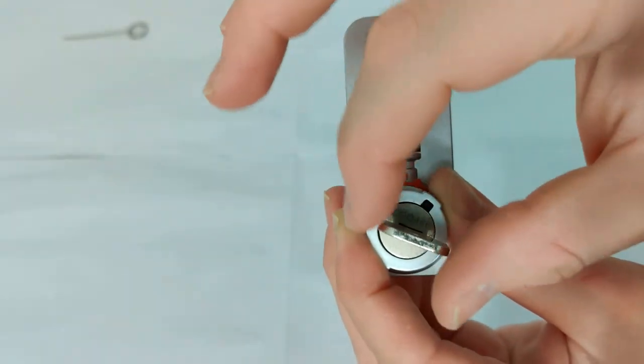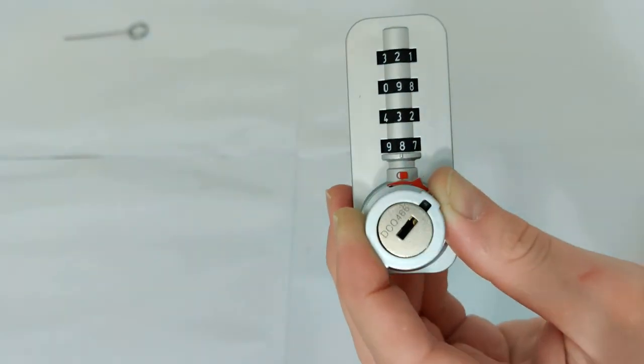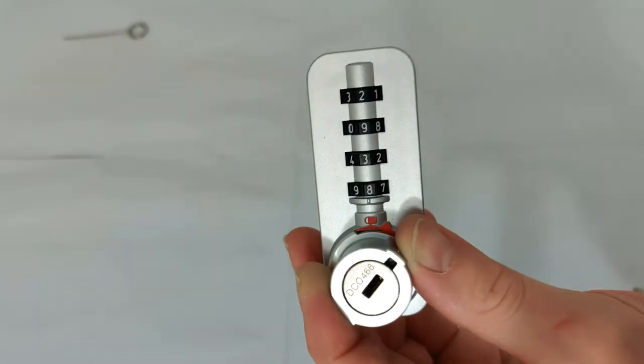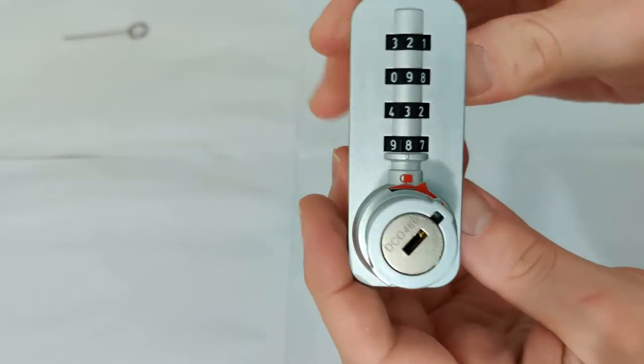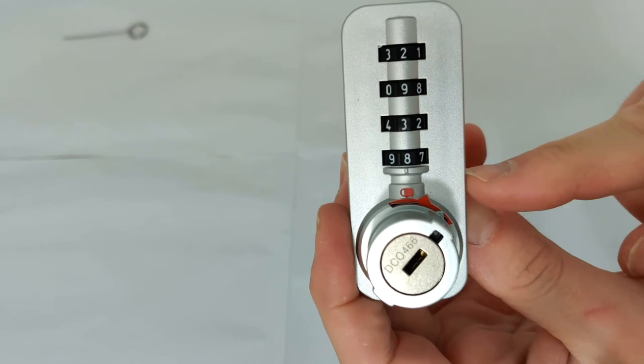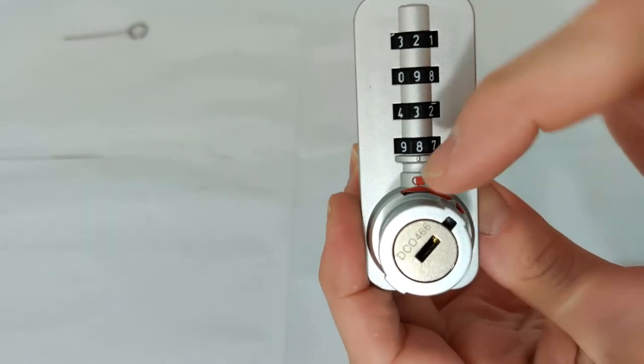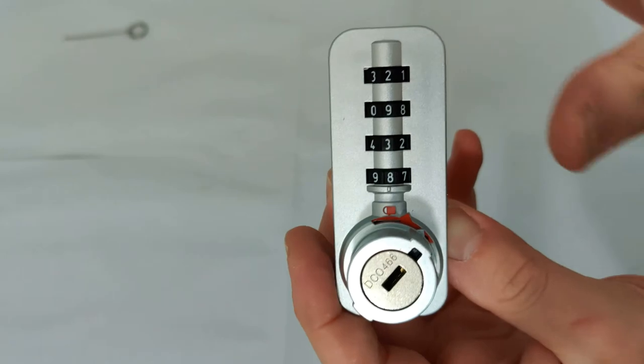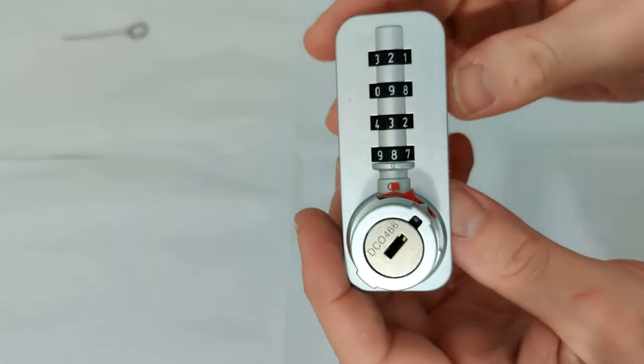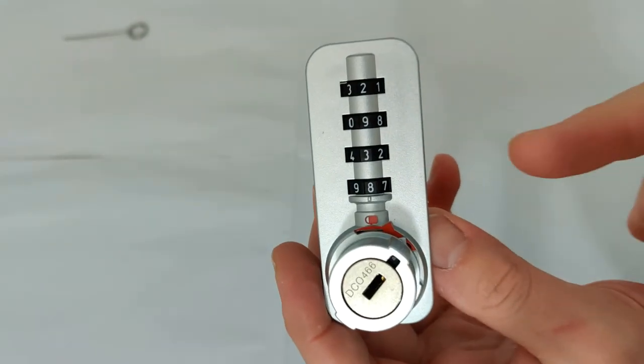Now we can turn the key back around and remove it. At this point we have two options. We can now either retain this code, turn the dial back to the lock position and then that'll be the code saved and retained once more. But we're going to reset this one.